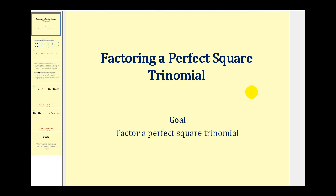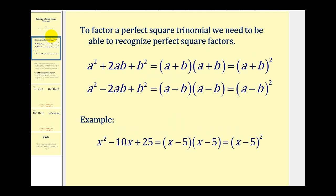Welcome to a video on factoring a perfect square trinomial. To factor a perfect square trinomial, we need to be able to recognize perfect squares. So if we have a trinomial where the first term is a perfect square, the second term is a perfect square, and the middle term is twice a times b, it will be a perfect square trinomial.